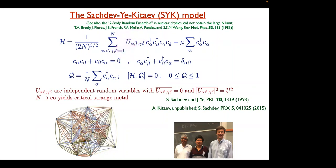I'm interested in the limit of very large N. In that limit this model has a self-averaging property — it doesn't matter which coefficients you pick; with probability one you'll get the same answers for the quantities I compute. The u_{alpha beta gamma delta} have zero mean and root mean square value u-squared. The most important property is that they are independent random variables — you have N to the fourth independent random numbers, and you just pick one set.